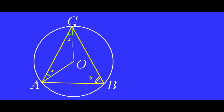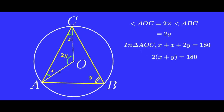In triangle AOC, the central angle is C. There is an alternate angle between y and e. We have 2y and 2y, and angle IOC equals 2x. In triangle IOC, x plus 2y is equal to 180, so x plus 2y divided by 2 equals 90 degrees.